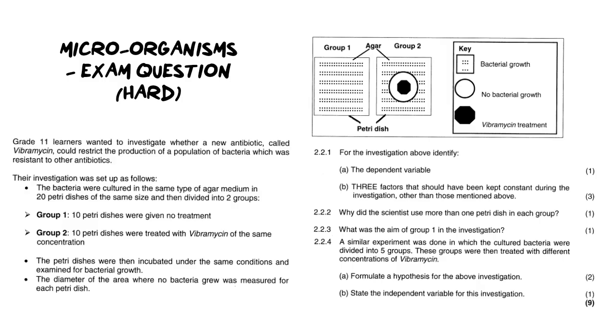All right let's break down this question. Now I often see a lot of people complaining about how difficult application questions are in exams and tests, particularly the experiment ones like the one you see here. I want you to know that actually a lot of information is given to you and sometimes we overlook it. This beginning paragraph is really important and I'm going to show you why now. In the beginning it says a grade 11 learner wanted to investigate whether a new antibiotic called vibramycin could restrict the production of a population of bacteria which was resistant to other antibiotics. Now I want to point something out to you.